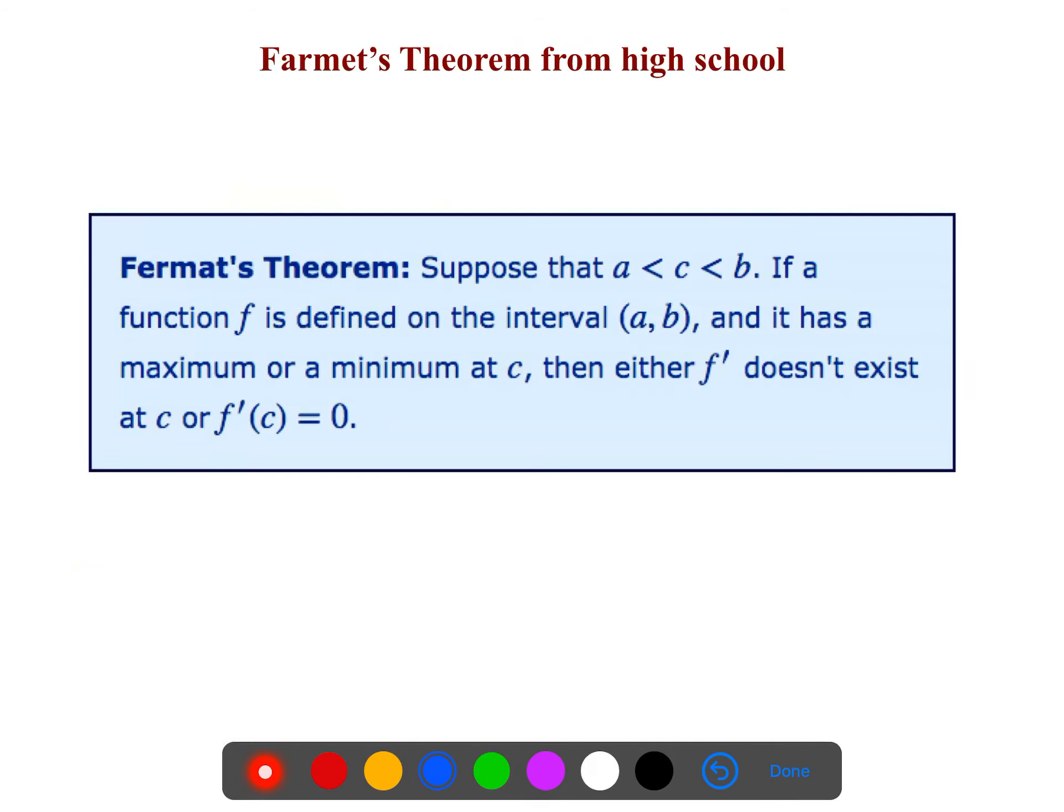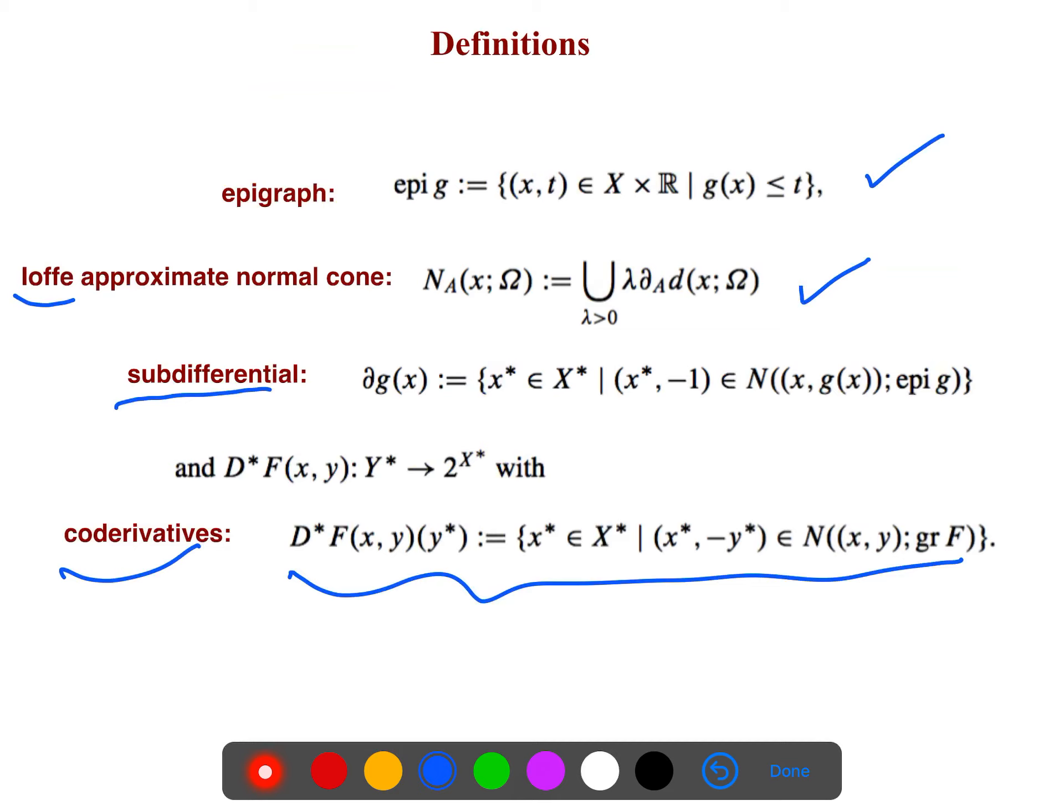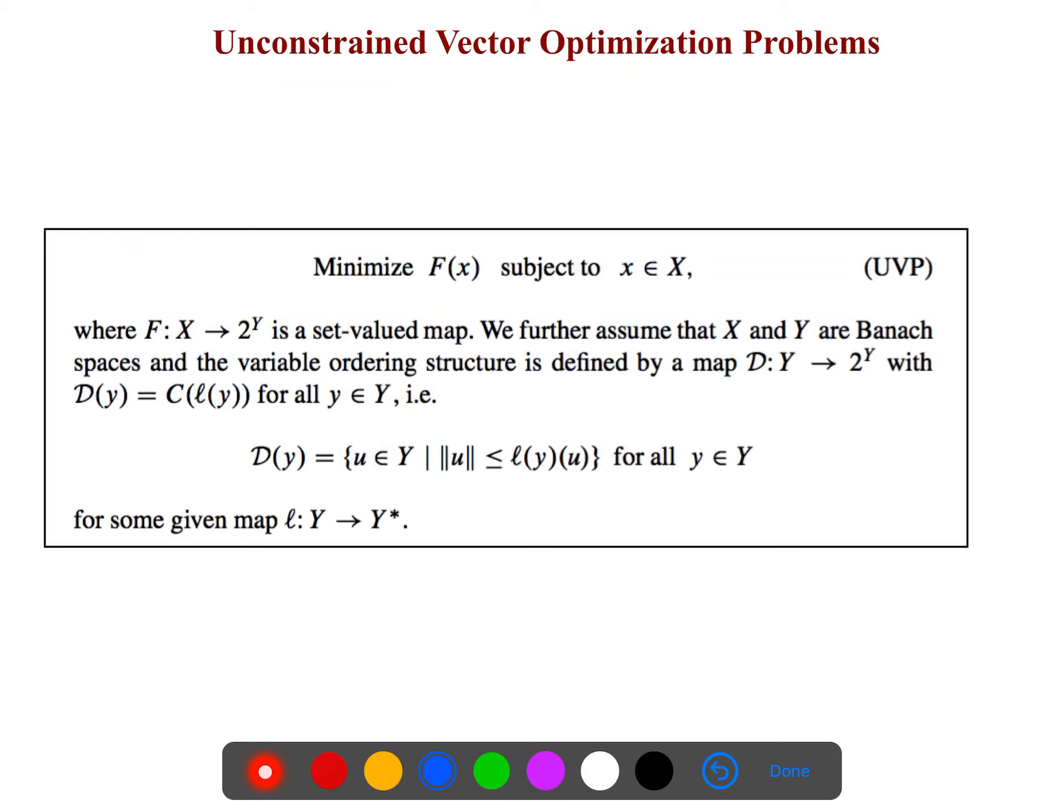So, instead of derivative, you know, in Fermat theorem that we are aware of in high school, we know it from high school, from there, we need a differentiable function. But here, it could be discontinuous. So, we can talk about by co-derivatives instead of derivatives.